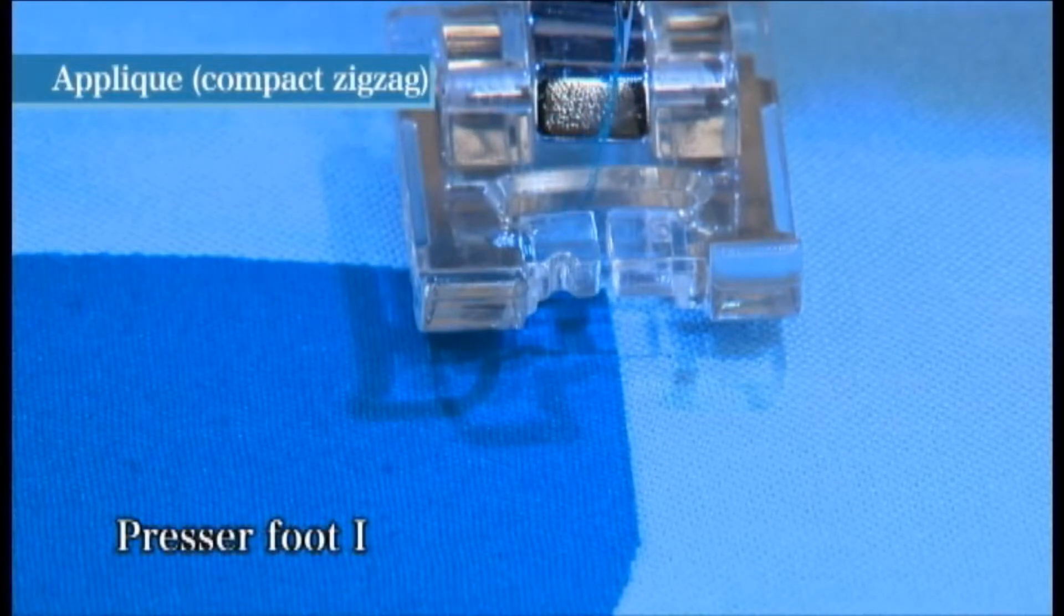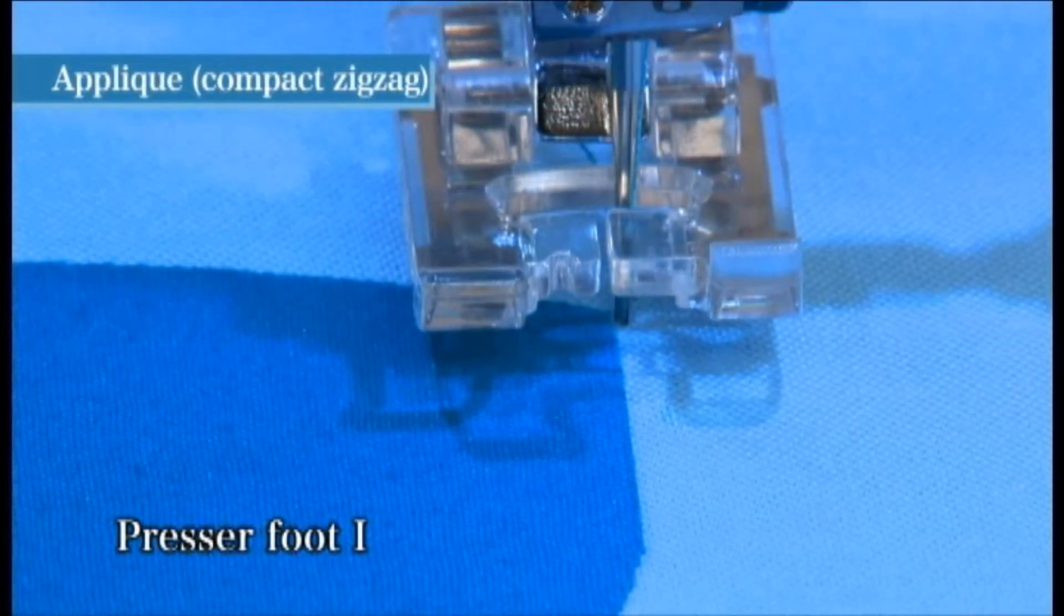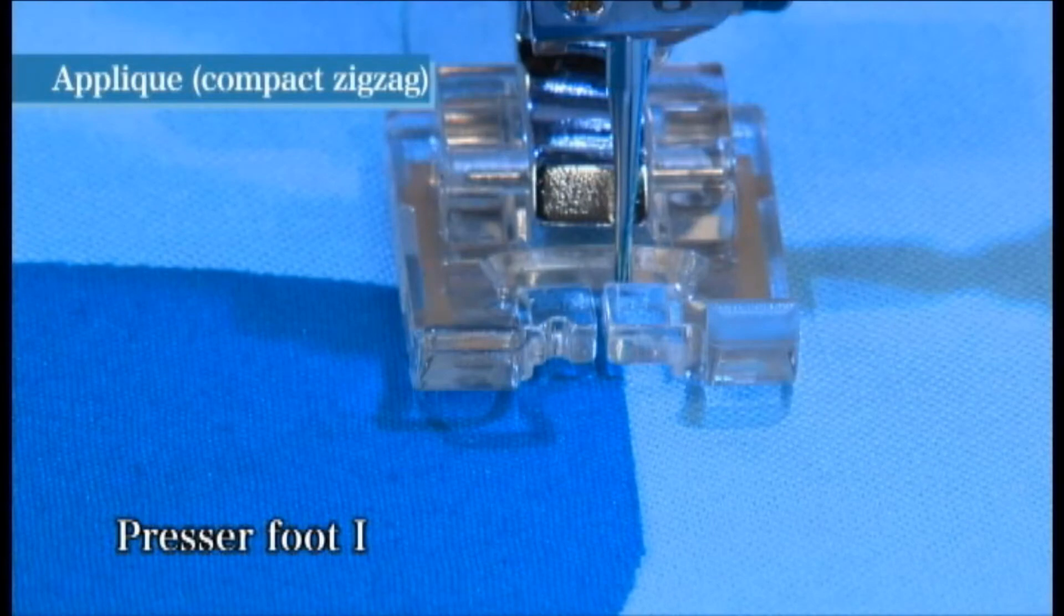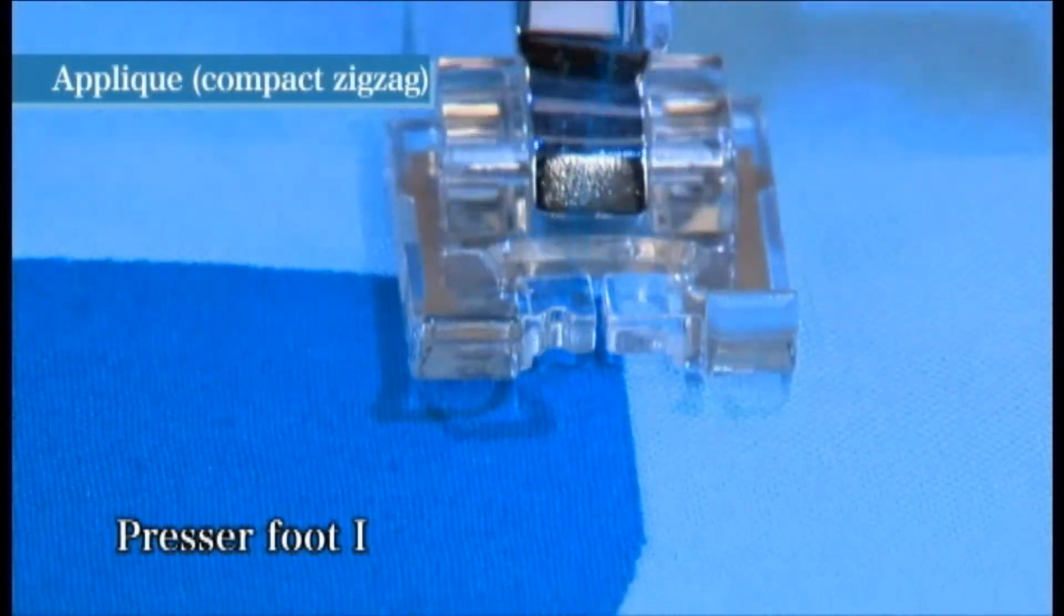Begin sewing by turning the hand wheel towards you so that the needle falls outside the applique fabric. When you begin sewing, the machine will automatically sew three lock stitches.